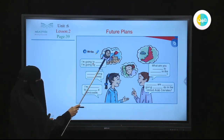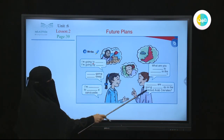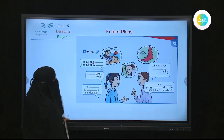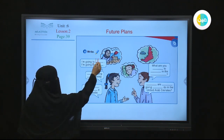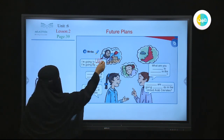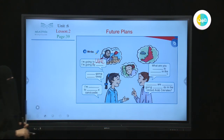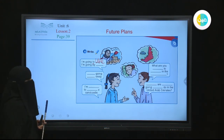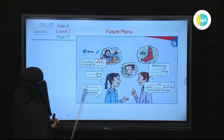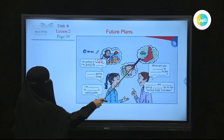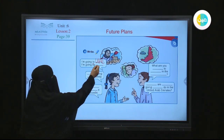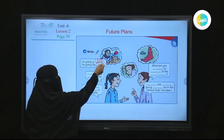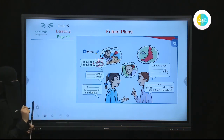Number two: 'I am going to read a book' — this is an action, not a place. 'I am going to read a book.' When I say 'I am going,' this is future — something you are planning to do in the future. 'I am going to play football on the beach' — this is also an action. So where is 'playing football on the beach'? Here we have this boy playing football on the beach. Now the lady — where is she going? Here, you can see: United Arab Emirates. She is going to the UAE by car.